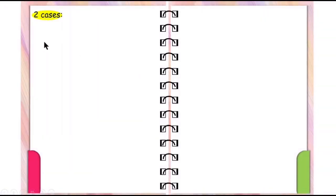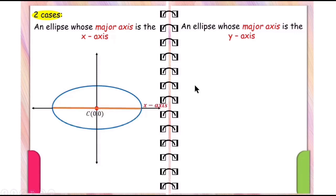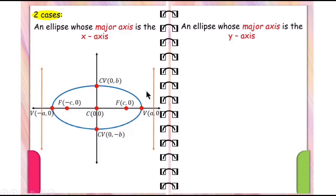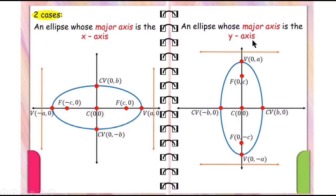We will consider two cases in obtaining the standard form of the equation of the ellipse with center at the origin: an ellipse whose major axis is the x-axis, and an ellipse whose major axis is the y-axis. This is the graph of an ellipse whose major axis is on the x-axis — these are the foci, the vertices, the co-vertices, and the directrices. And this is the graph of an ellipse whose major axis is the y-axis, with its foci, vertices, co-vertices, and directrices.